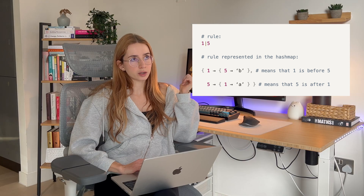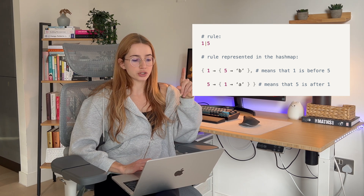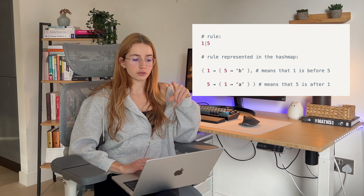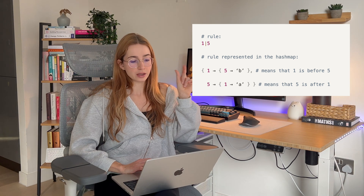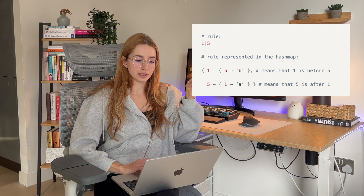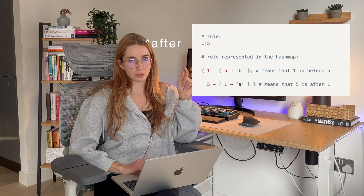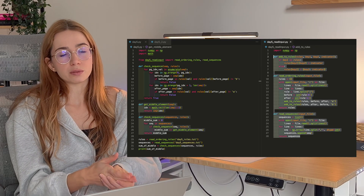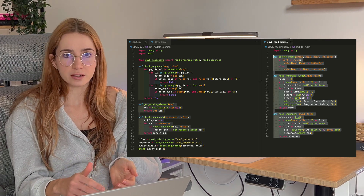For example, if we have one pipe five — meaning one comes before five — I would create a hash map with a key of one pointing to another hash map with a key of five and a value of 'b', which reads as one comes before five. Then I have another entry where five is the key, pointing to a second hash map where one is the key and the value is 'a', reading as five comes after one. Basically you store information in both ways — before and after — so that you can look it up in constant time.